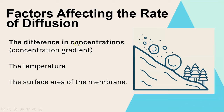The difference in concentrations is the concentration gradient, and the steeper the gradient the faster diffusion will happen. It's a bit like these snowballs rolling down the hill — the steeper the gradient of the hill, the faster they're going to roll down. The higher the concentration in one area, the faster those particles will diffuse to the area where there's a lower concentration.